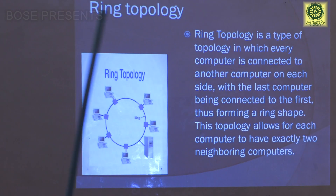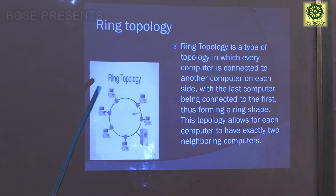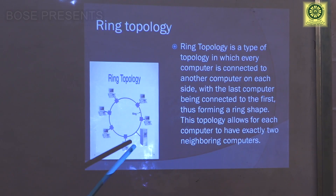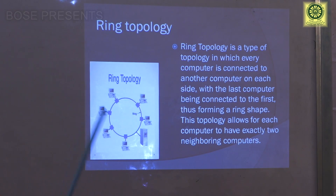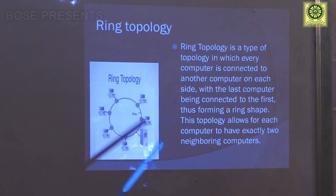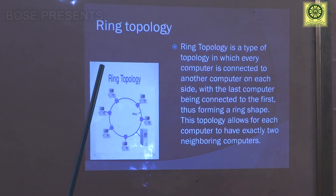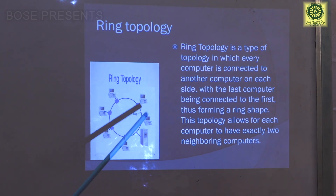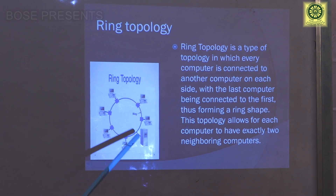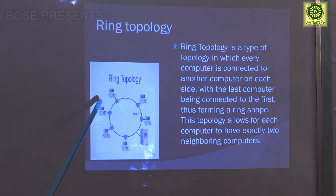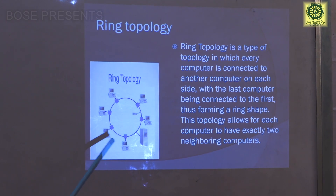Coming to ring topology — here is the physical arrangement of a ring. It is connected with all the computers, CPUs, and printers. From the definition point of view, ring topology is a type of topology in which every computer is connected to another computer, with each computer connected to two adjacent computers. When data transmission starts from the first node, it transfers to every node and finally reaches the destination.